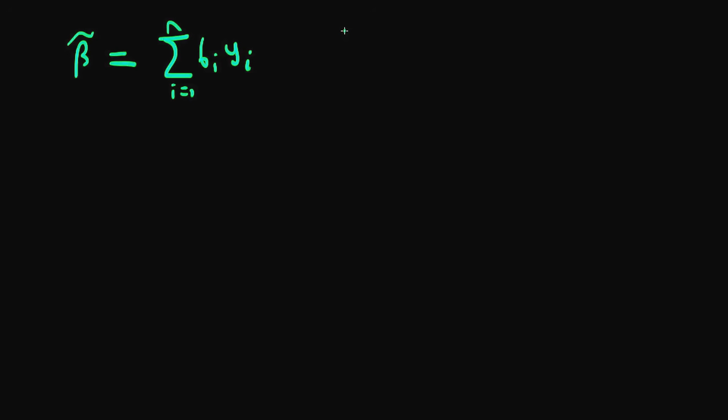And we can write this out a bit more explicitly using the fact that we know that there is some sort of population model, which is yi is equal to alpha plus beta times xi plus ui. So substituting this in for yi here, we have that beta tilde is equal to the sum of i equals 1 to n of bi times alpha plus beta xi plus ui. So I've just substituted this into here.